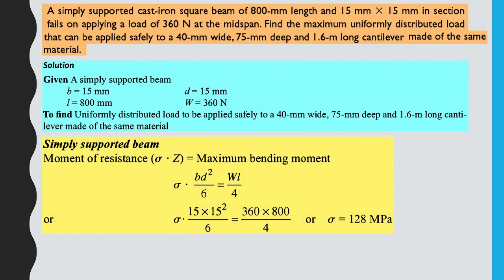Problem 3: A simply supported cast iron square beam of 800 mm length and 15 mm × 15 mm cross section fails when a point load of 360 N is applied at mid-span. Find what uniformly distributed load can be applied safely to a 40 mm wide, 75 mm deep, 1.6 m long cantilever made of the same material.